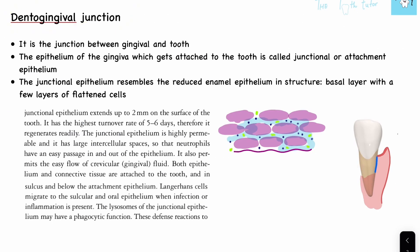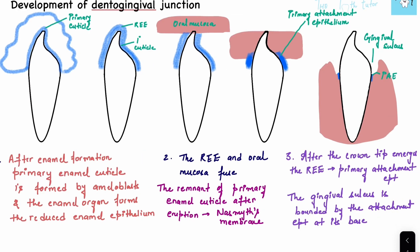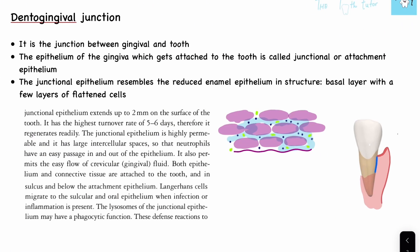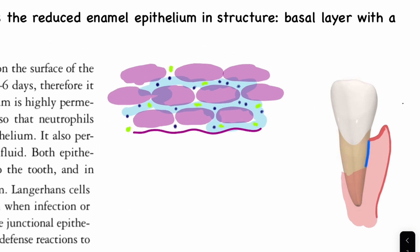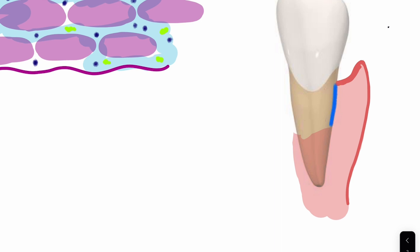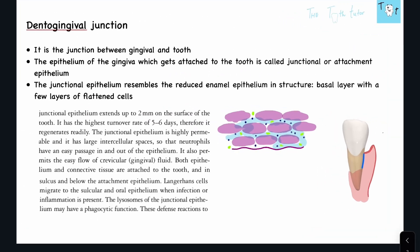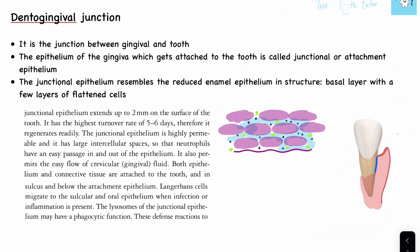The next topic is the dento-gingival junction. We'll talk about the epithelium of the dento-gingival junction and its development. The dento-gingival junction is a junction between the gingiva and the tooth — the point where the gingiva and the tooth meet. The epithelium of the gingiva which gets attached to the tooth is called junctional or attachment epithelium.